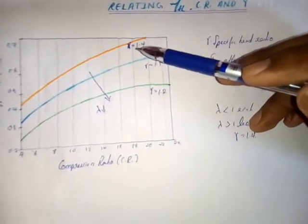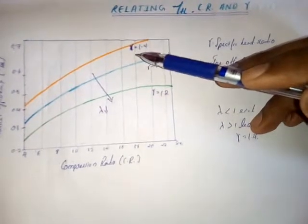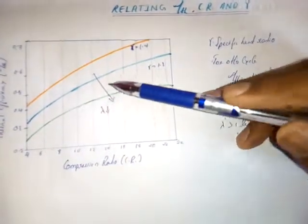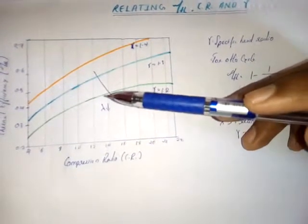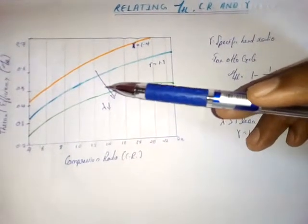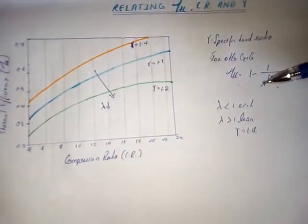We can see that for the gamma value of 1.4, the thermal efficiency is higher, and as the gamma value reduces, the thermal efficiency reduces. The other thing that is directly related to the thermal efficiency is the compression ratio.